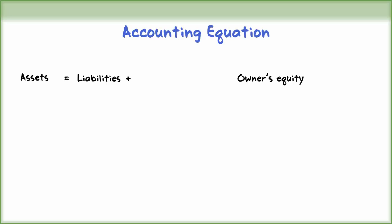Let's look at the categories in the basic accounting equation. Assets are the resources of a business. Assets have a normal debit balance, increase with a debit, and decrease with a credit.